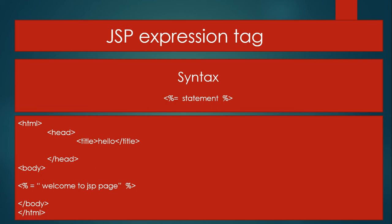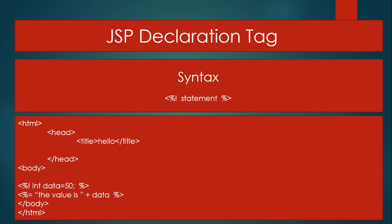This is the JSP declaration tag, and this is the last or third tag. The syntax of the declaration tag is: opening angle bracket, then percentage, then exclamation mark, then the statement, then percentage, and closing angle bracket. We are using the declaration tag for declaring variables and methods.